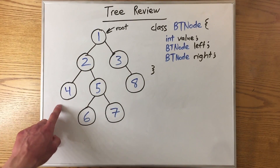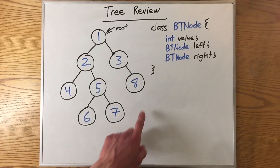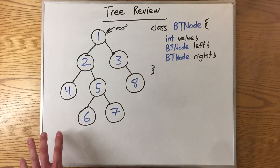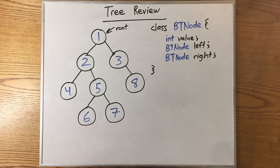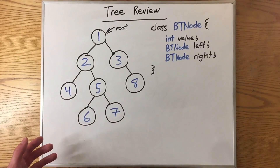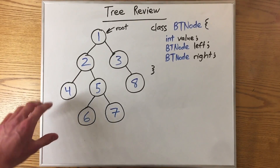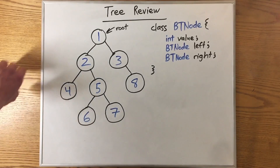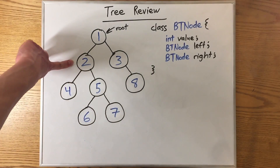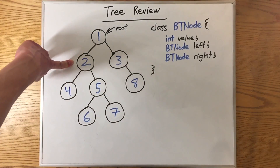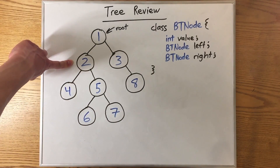In this binary tree, these four nodes at the very bottom don't have any children, and they're called the leaves of the tree. A subtree for a binary tree is any node in that tree, as well as all the nodes that come under it.